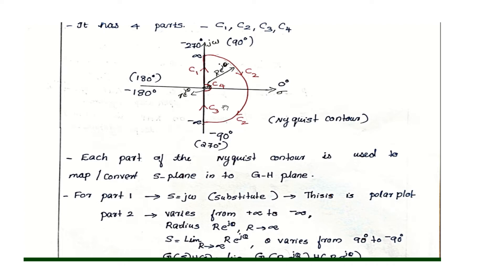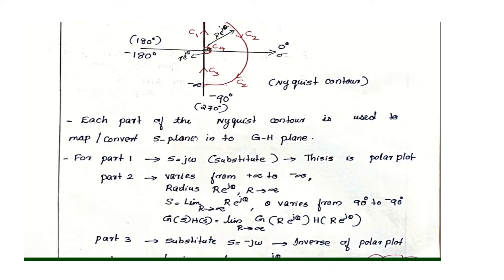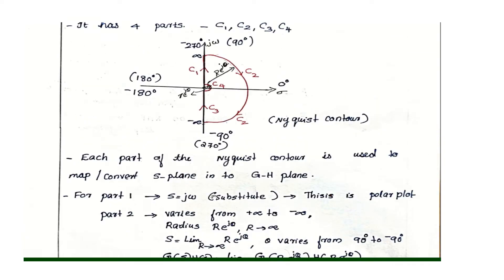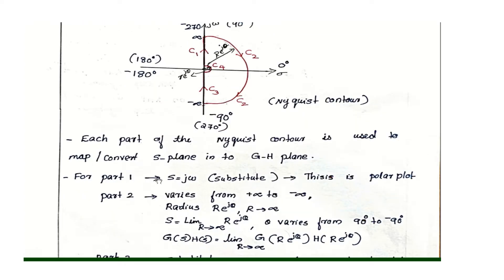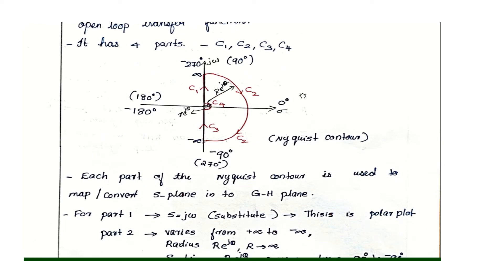To convert the Nyquist plot, all four parts — Part 1, Part 2, Part 3, and Part 4 — must be converted. For Part 1 (C1), we substitute S equals j omega into the transfer function and compute the magnitude and angle values. This plot of magnitude and phase for C1 is called the Polar Plot.